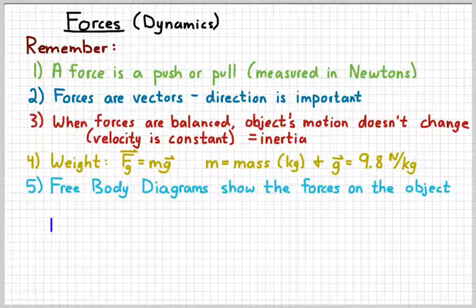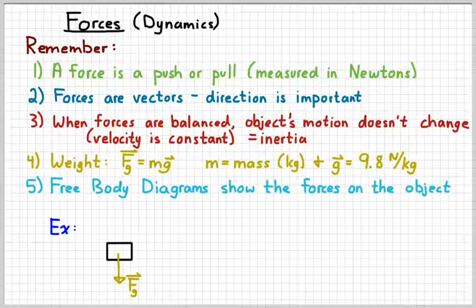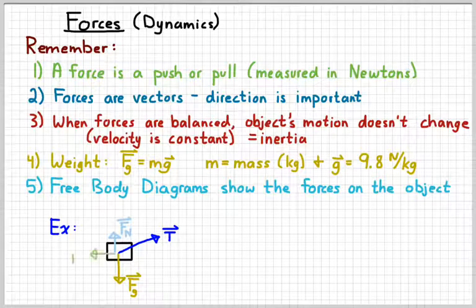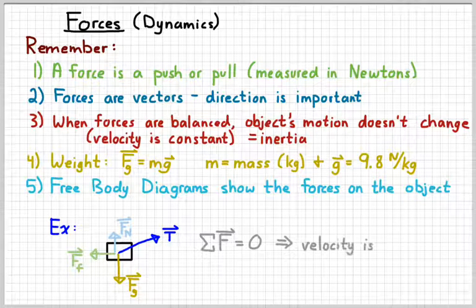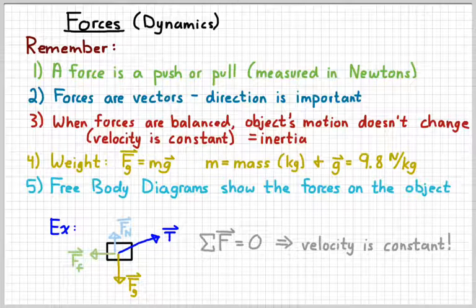So previously we had done things like this — we had an object with a couple forces acting on it, but the net force was zero because the forces were balanced. And when the forces are balanced we learned that the velocity is constant. So today we have to kick it up a notch. We have to understand what happens when the net force is not zero, or when it is unbalanced.